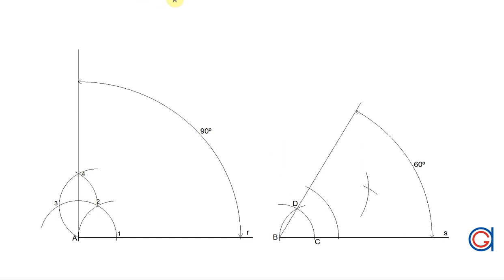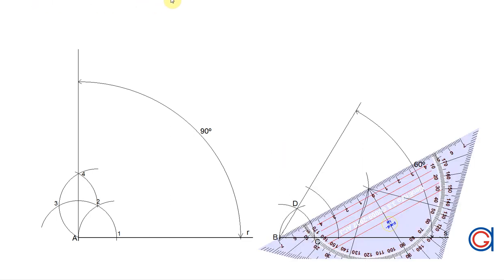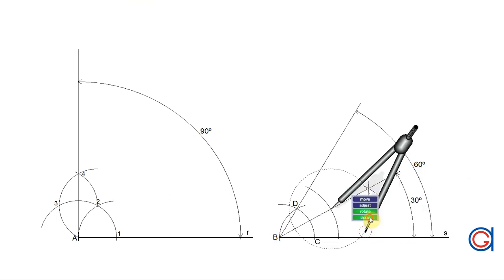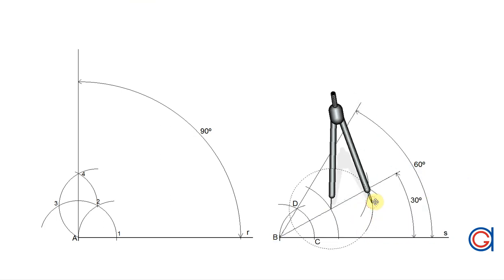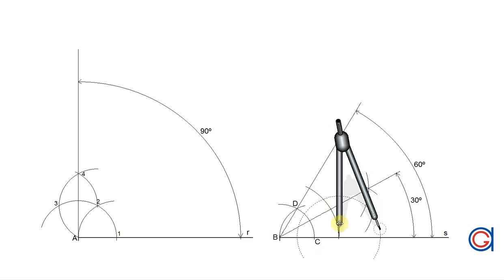So now as can be seen we join B through this intersecting arcs forming a 30 degree angle. We then repeat this process to obtain a 15 degree angle by working out the angular bisector of the 30 degree angle as can be seen here in the video.